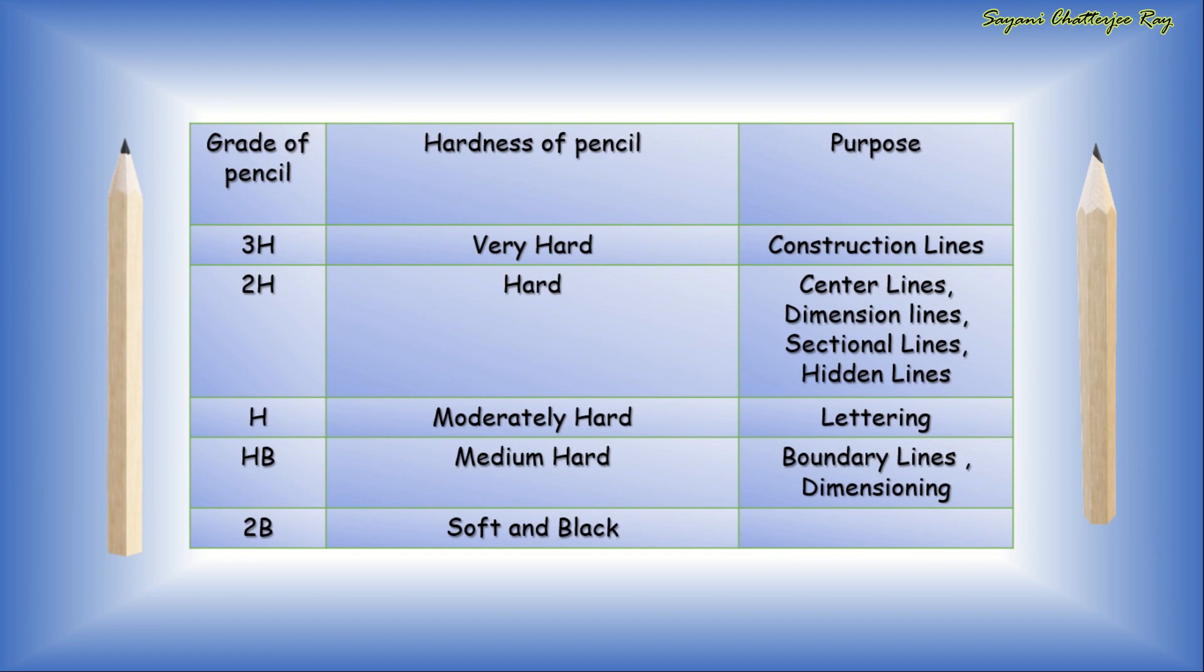You can see 3H grade which is very hard and is used for drawing construction lines. Next is 2H, which is quite hard, relatively less hard than 3H grade, and is used for drawing center lines, dimension lines, sectional lines, or hidden lines.